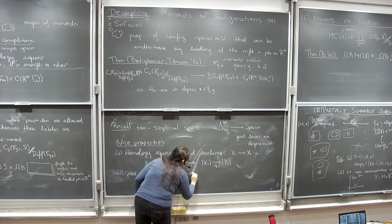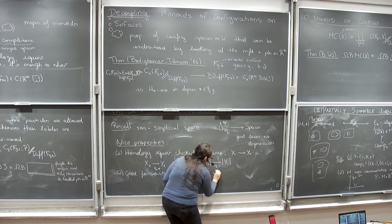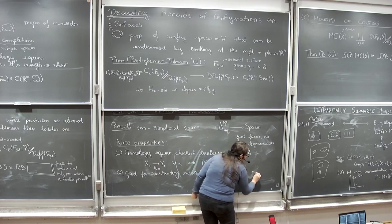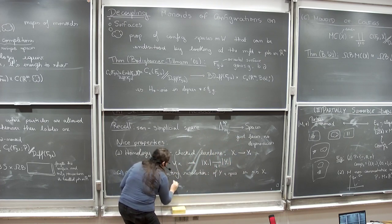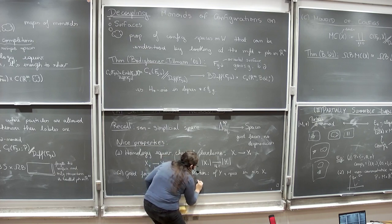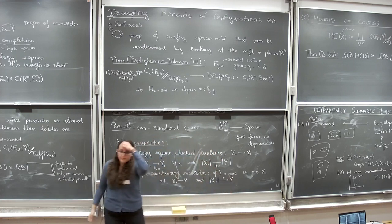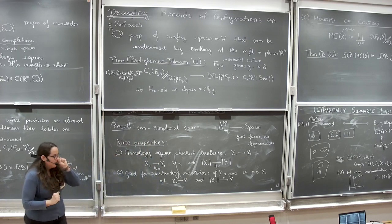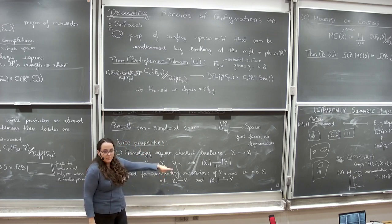Nice properties I'll use today: first, homology equivalences can be checked level-wise — if I have a map of semi-simplicial spaces such that for every k this is an H_* equivalence, then this implies a homology equivalence on their realizations. Second, they are good for constructing resolutions. A resolution of Y is a semi-simplicial space X_• with an augmentation map such that all simplicial levels map to Y and the map on the geometric realization is a weak equivalence.